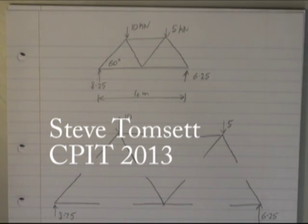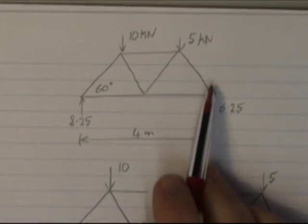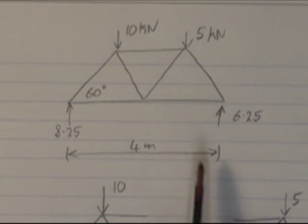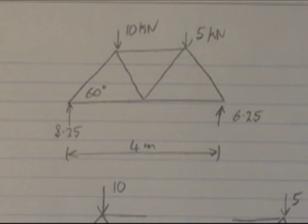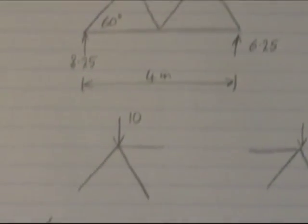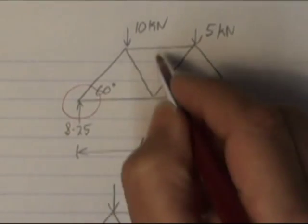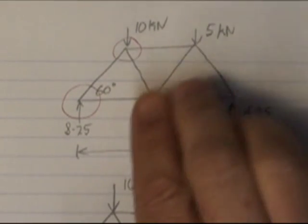This is an example for method of joints. First start with a free body diagram for your framework. Simple framework with two applied loads and two supports. To do method of joints, what we need to do is to draw a free body diagram for each of the joints in here.